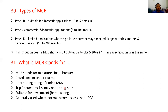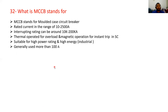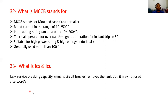Question 32: what does MCCB stand for? MCCB stands for moulded case circuit breaker. Rated current range: 10 to 2500 amperes. Interrupting rating: 10 kA to 200 kA. Thermal operated for overload, magnetic operation for instant trips. Suitable for high power rating and high energy industrial applications, generally used for more than 100 amperes.